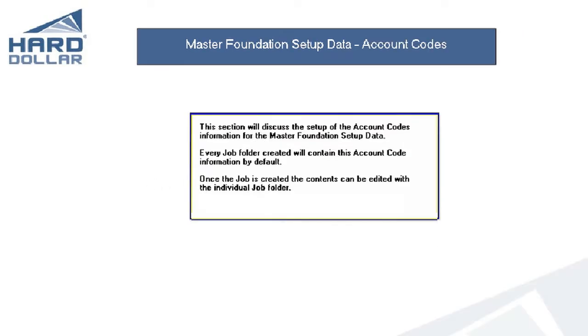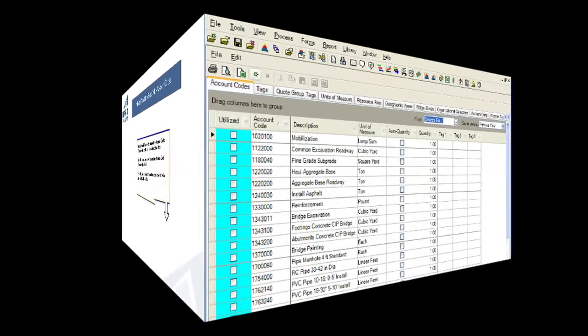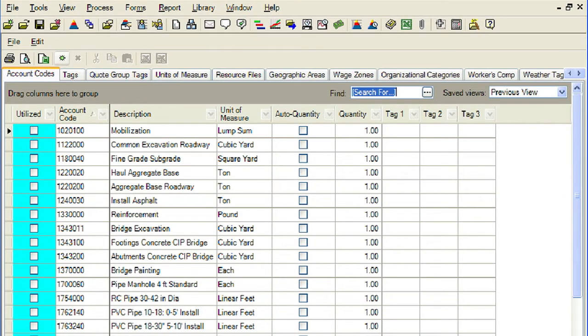This section will discuss the setup of the account codes information for the master foundation setup data. Every job folder created will automatically include this account code information by default. Once the job is created, the contents can be edited within the individual job folders. The Foundation Setup Data account codes tab establishes master codes and descriptions for cost accounts. Account codes are used to organize the job's price structure as a budget, and are assigned to the elements of the job's price breakdown structure. Account codes can be assigned directly on the individual cost items, job overhead, or pay item forms.